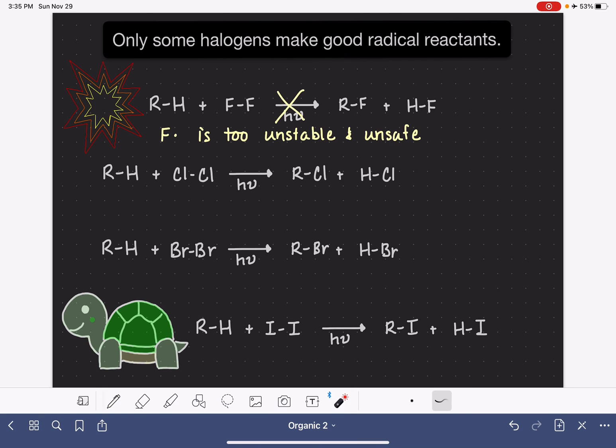On the other end of the spectrum, the iodine molecule (I2), because it is so large, the iodine radical is too stable. It is so stable that it reacts so slowly.